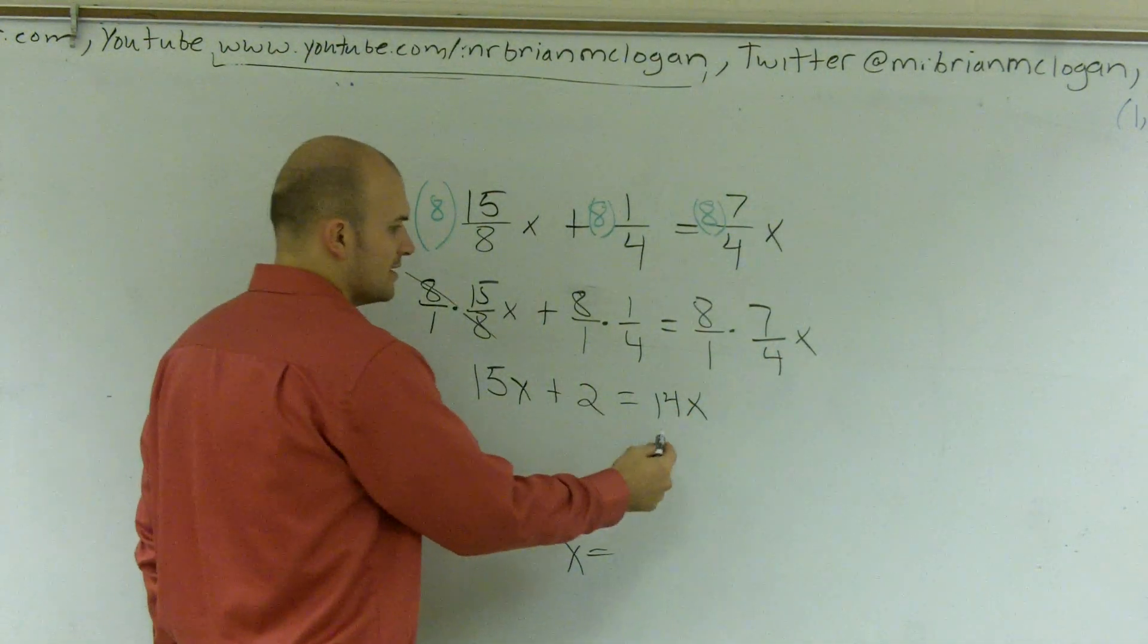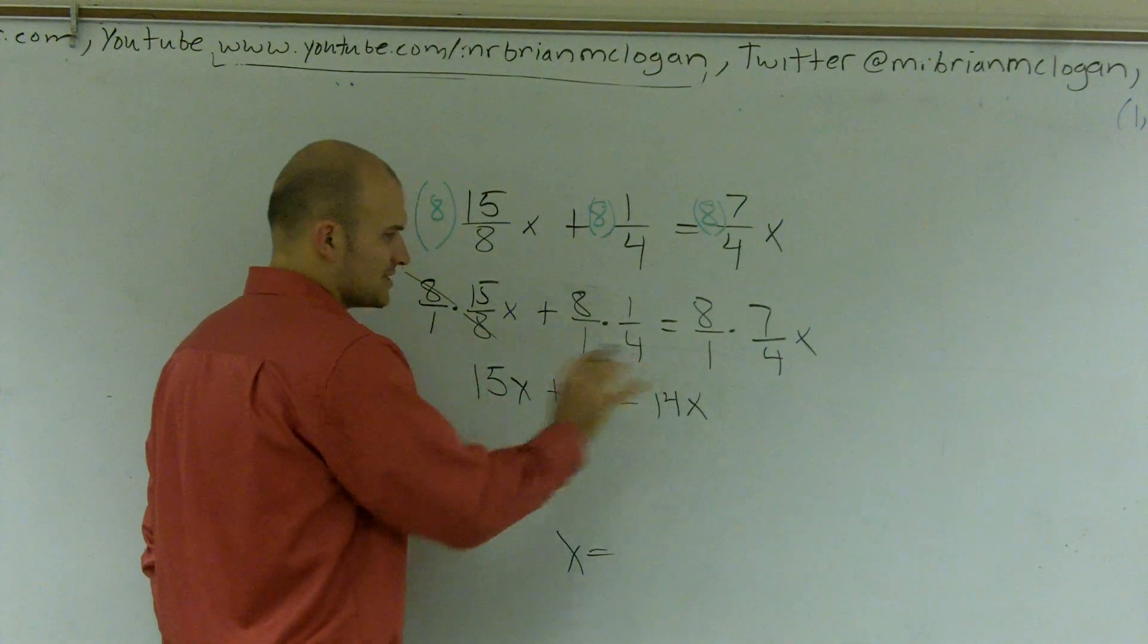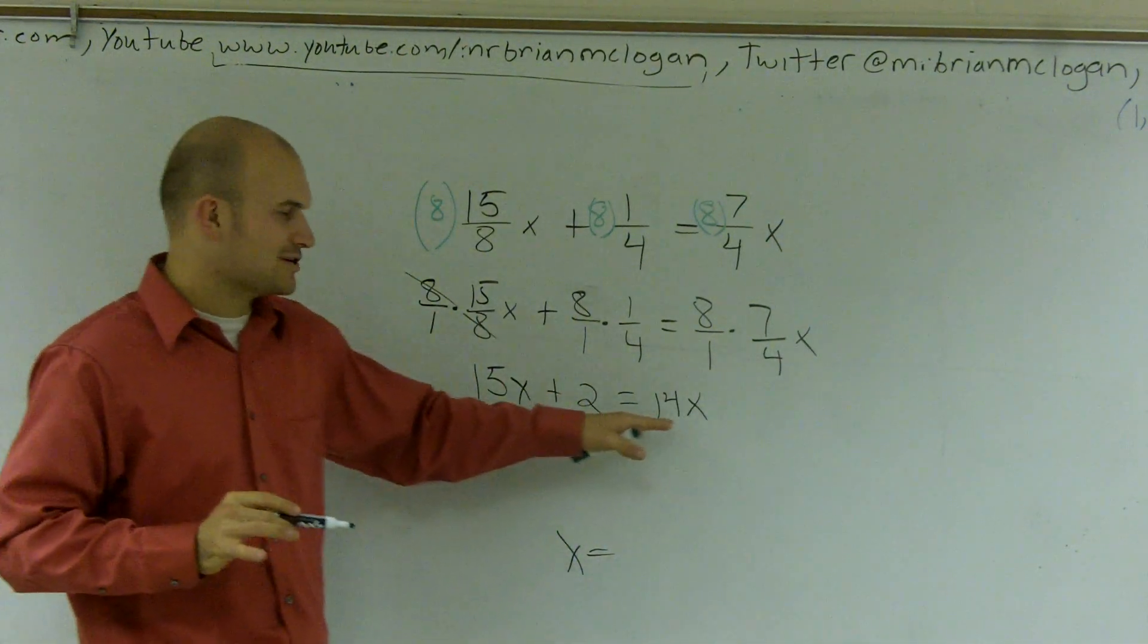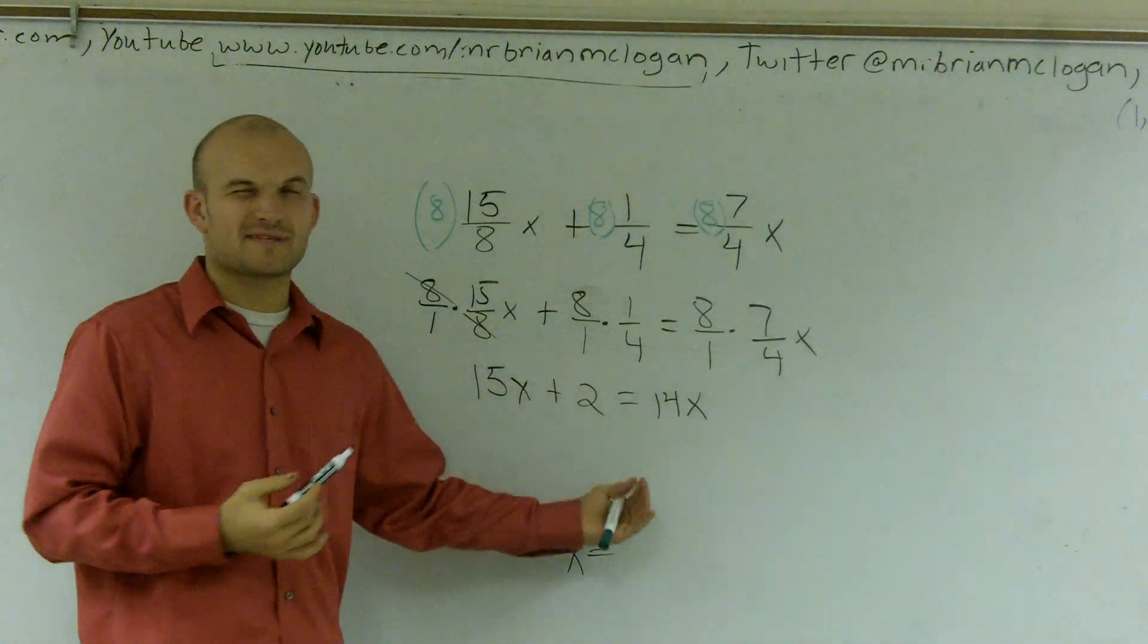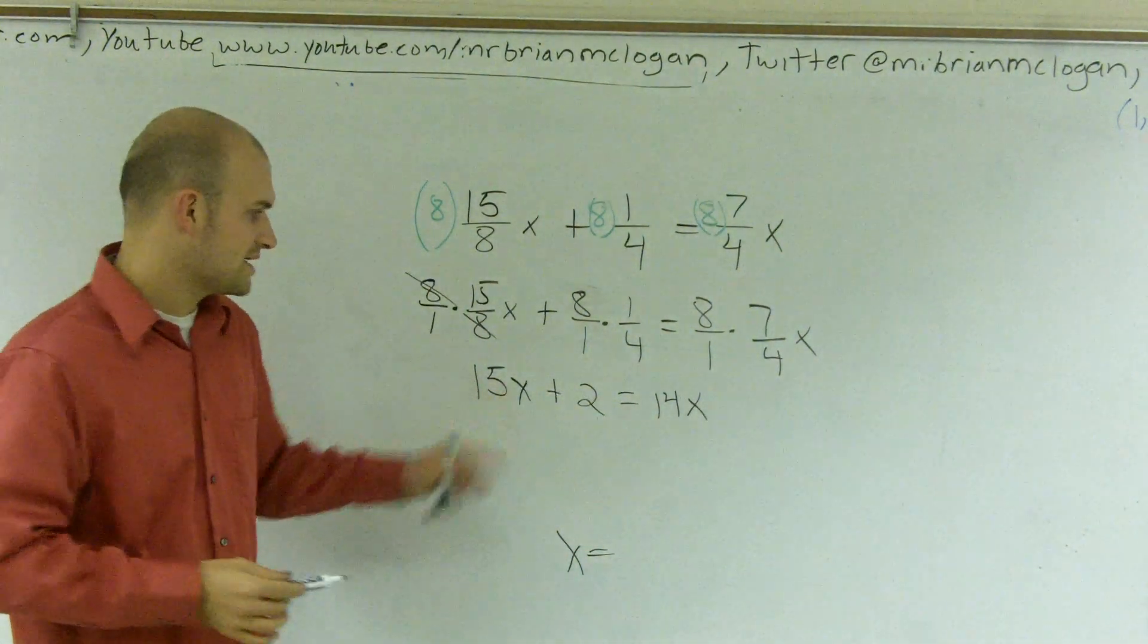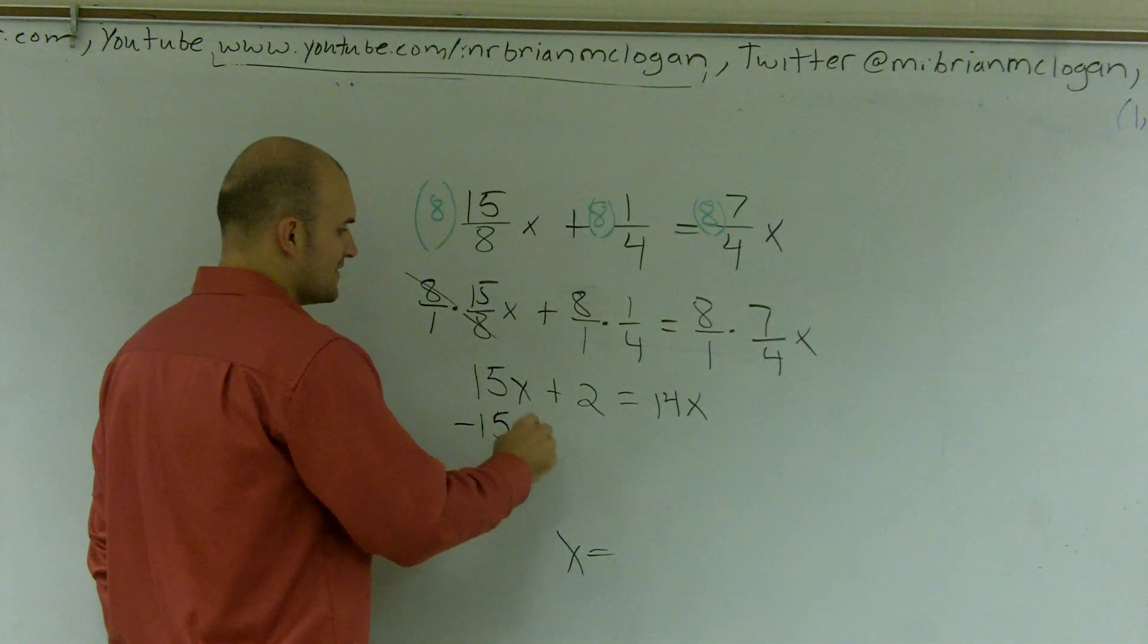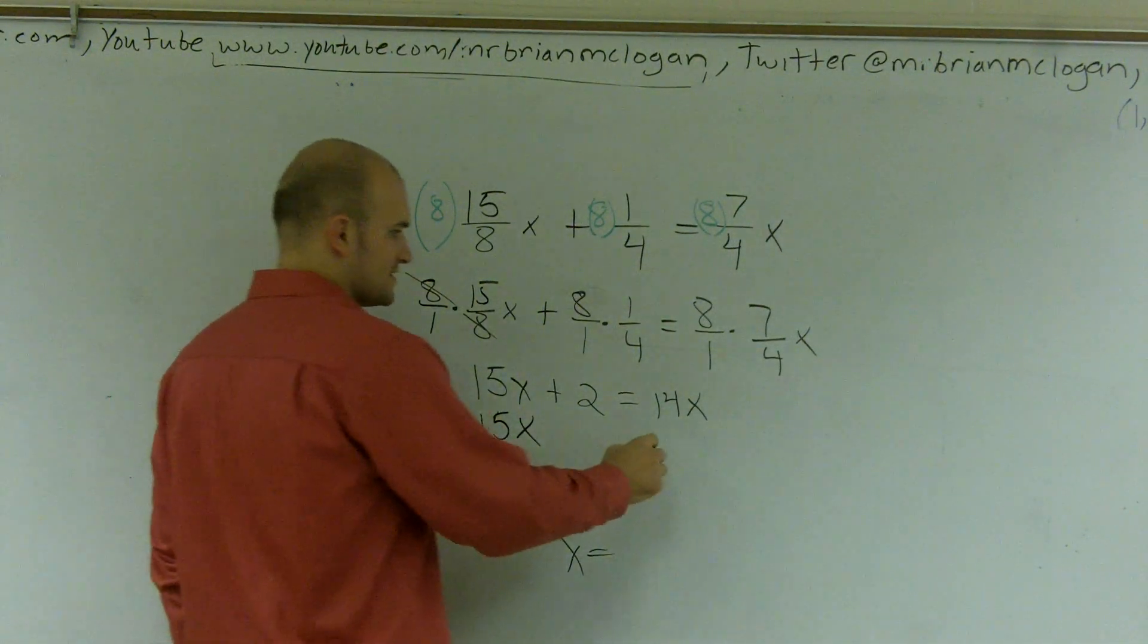So here I have a negative 14. So I'm going to actually, you know, I could get rid of the negative 14, but then I'm going to get left with zero, and I don't want to show you guys that problem for this one. What I'm going to do for here is I'm actually going to get rid of the negative 15. Or I'm sorry, I'm going to get rid of the 15x by subtracting 15.